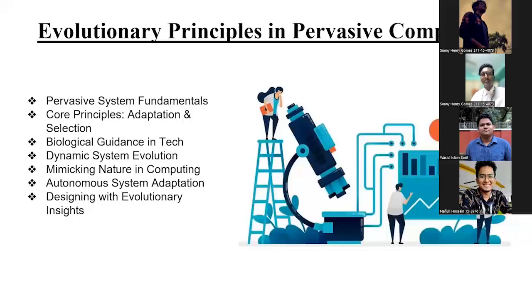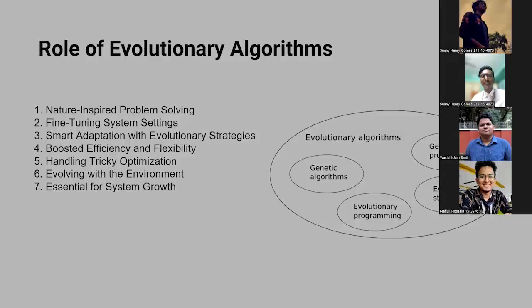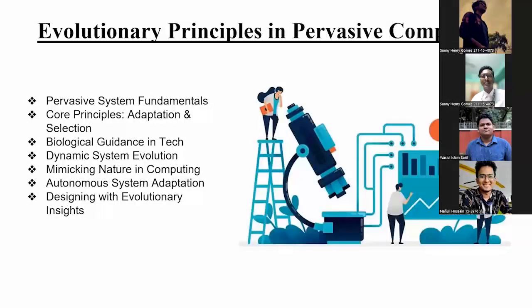They use these principles to change and adapt to new needs and situations. This evolutionary approach, inspired by nature, helps these systems change and adapt just like living things. Understanding how nature's rules apply to technology helps us make systems smarter and more helpful. Now let's see the evolutionary principles of pervasive computing, which basically lets us see the evolutionary principles in the systems that operate the backdrop of adoption.